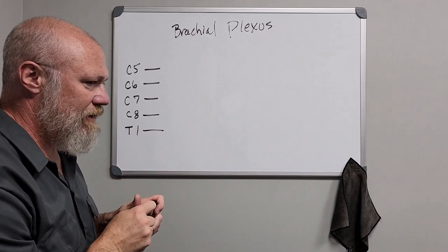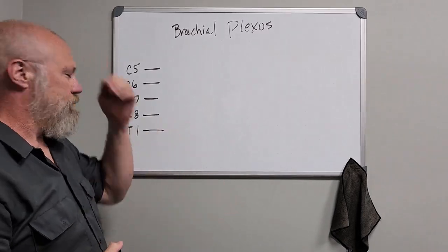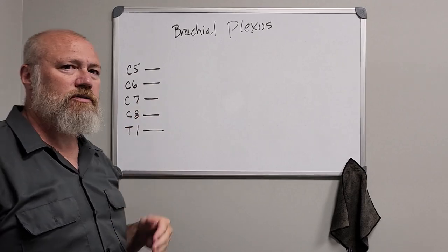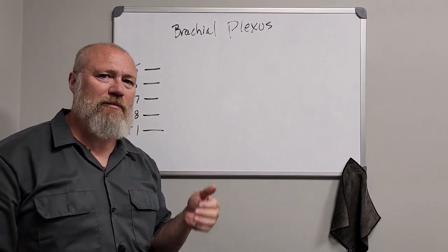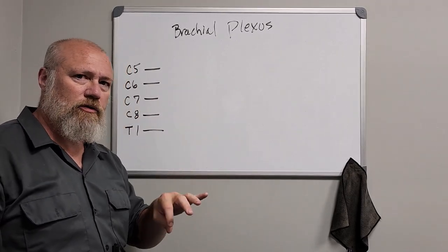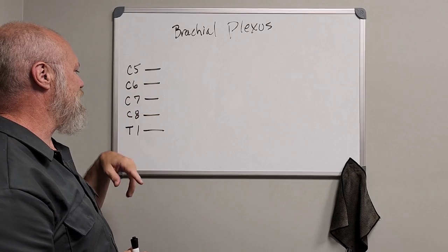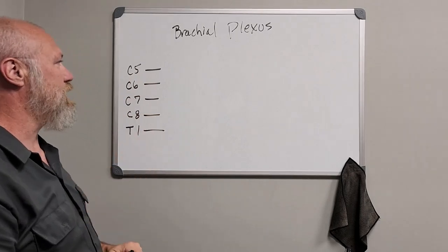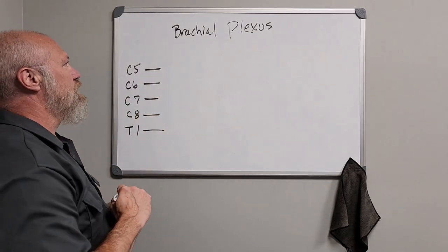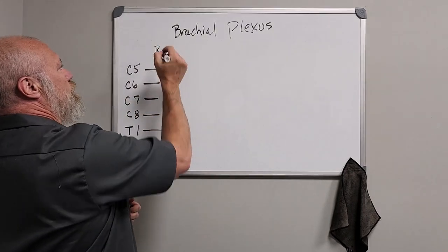You're going to have some roots. When I say roots, I'm referring to the ventral primary ramus of the spinal nerve at cord levels C5 through T1. C5 through T1 — those are your roots.